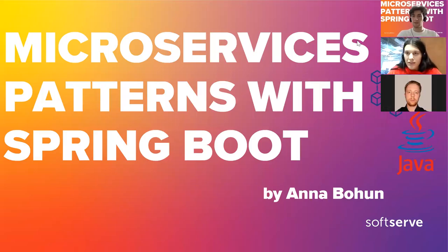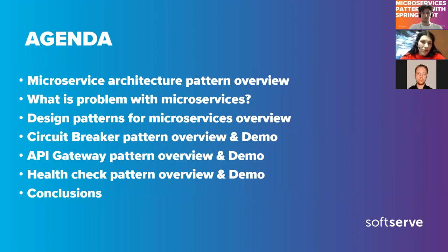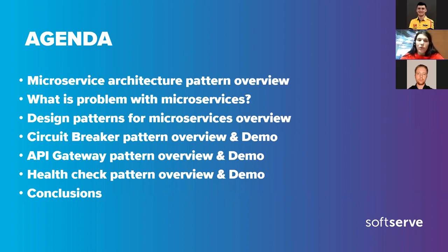Today we'll discuss microservices patterns with Spring Boot. First, we'll refresh knowledge about microservice architecture patterns and their advantages. Next, we'll discuss the problems with microservices and what we need to solve. I'll give a quick overview of all patterns available, and I've chosen three interesting ones: circuit breaker, API gateway, and health check. We'll discuss each and I'll demonstrate how they work with Spring Boot.